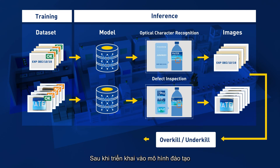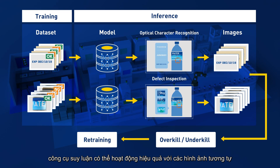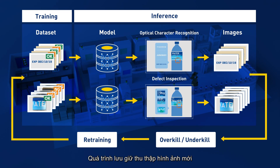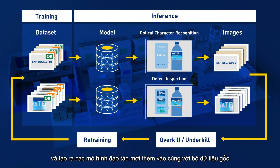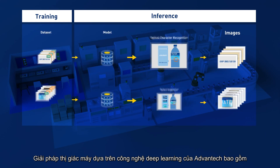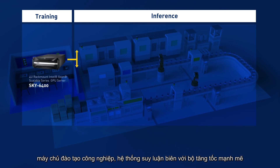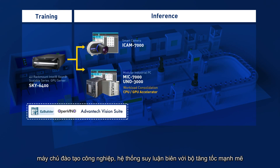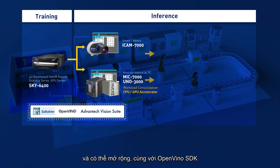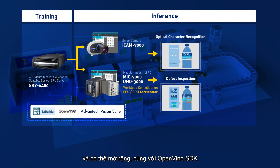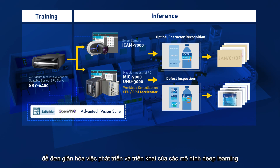After the deployment of the training model, the inference engine is able to operate effectively with similar images. The retraining process collects new images and generates new training models in addition to the original data sets. Advantech's deep learning machine vision solutions include industrial server training, the edge inference engine with powerful and scalable accelerators, and the OpenVINO SDK to simplify the development and deployment of deep learning models.